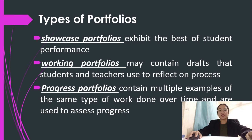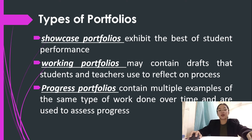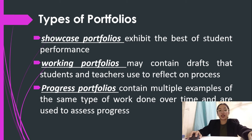Regarding types of portfolios: while portfolios have broad potential and can be useful for the assessment of student performance for a variety of purposes in core curriculum areas, the contents and criteria used to assess portfolios must be designed to serve those purposes. For example, showcase portfolios exhibit the best of student performance; working portfolios may contain drafts that students and teachers use to reflect on process; and progress portfolios contain multiple examples of the same type of work done over time and are used to assess progress. If cognitive processes are intended for assessment, content and rubrics must be designed to capture those processes.